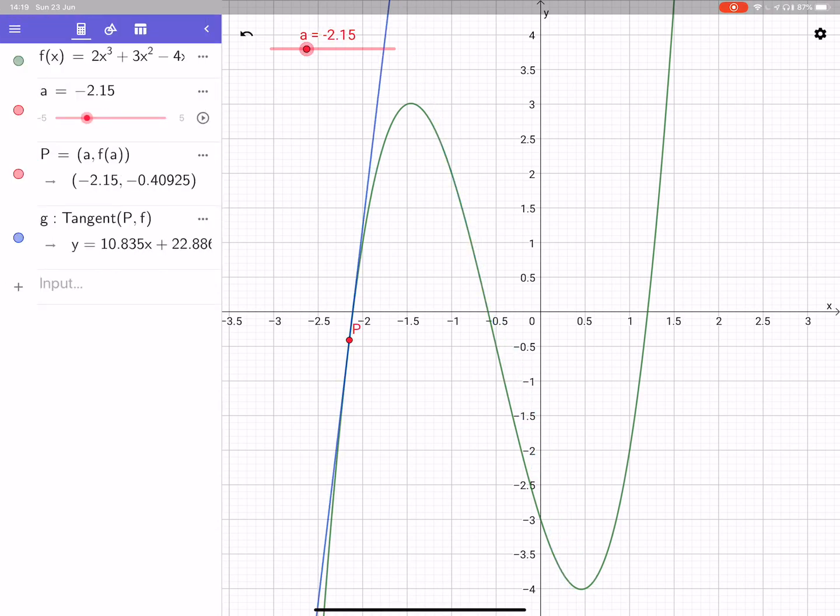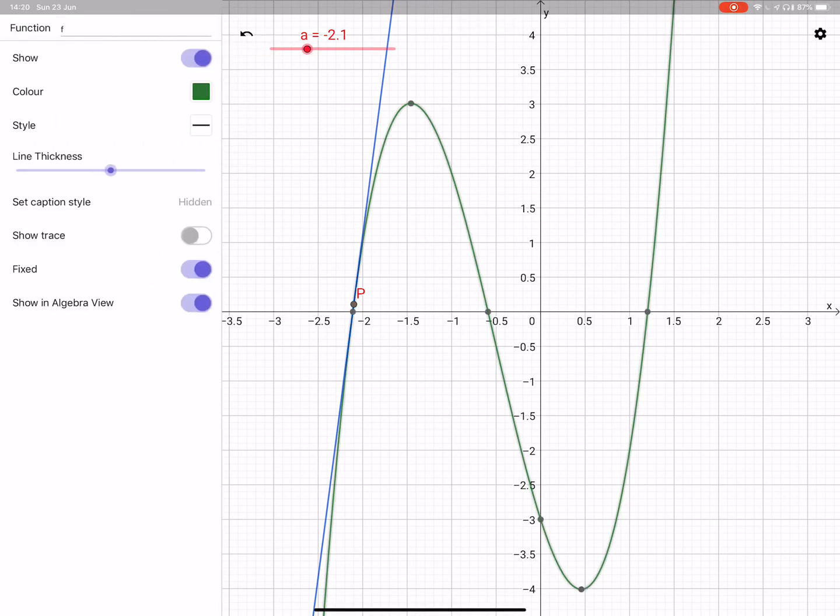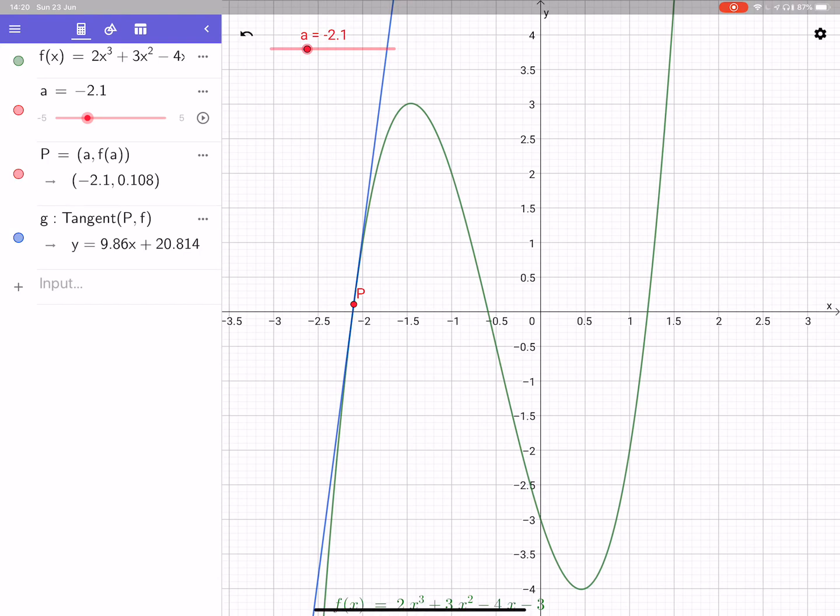Okay, so now what I've got is a tangent. Now what you'll notice is when you put this across this curve, if you want to label the curve that's another thing we should do. If we press the three dots and go to settings, set caption style, and then just put down, I'll put name and value at this time, it will add in the name of the function.